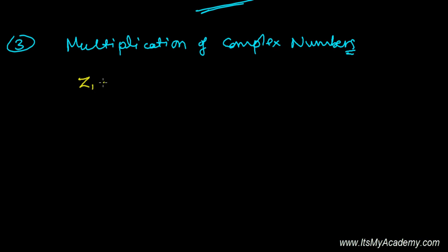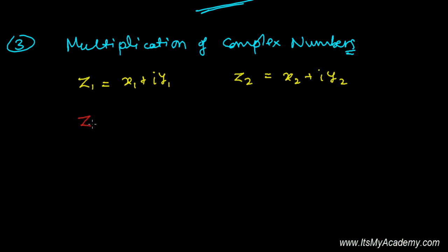Let me take an example. Let's say Z1 is X1 plus iY1, and I have another complex number Z2 which is X2 plus iY2. Now I want to find out the product of these two complex numbers, Z1 times Z2.